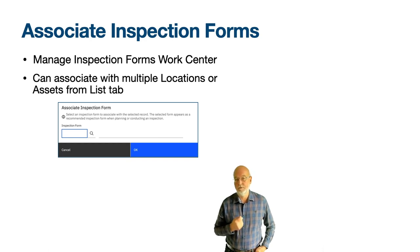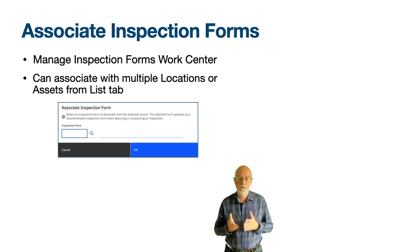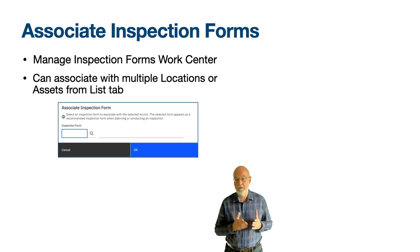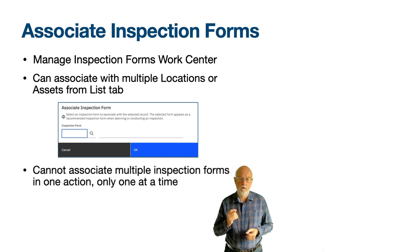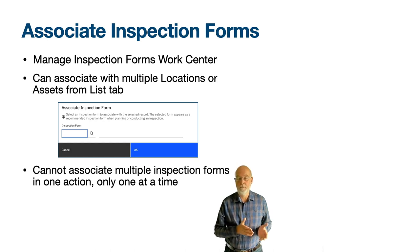This is particularly important if you wish mobile inspectors to easily find the right inspection form for an unscheduled inspection — if there are no associations, there may be hundreds of inspection forms to review. You can use the associate inspection form action from the list tab to make the association on multiple records, but each inspection form needs to be associated one at a time.